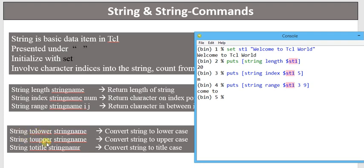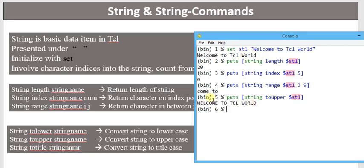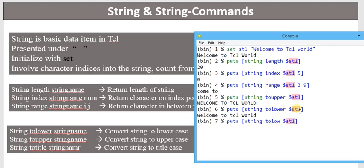Other string-based commands include `string tolower`, `string toupper`, and `string totitle`. These convert a string to lowercase, uppercase, or title case respectively. For example, `puts [string toupper $st1]` will display all characters in capital letters. Similarly, `string tolower` converts to lowercase. `string totitle` converts to sentence case — the first character is uppercase and the remaining characters are lowercase.